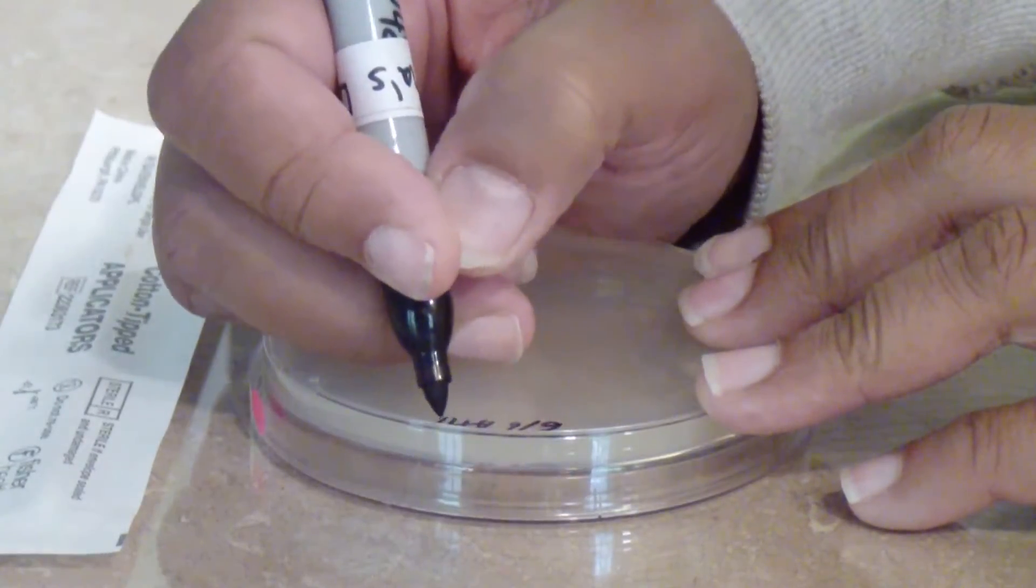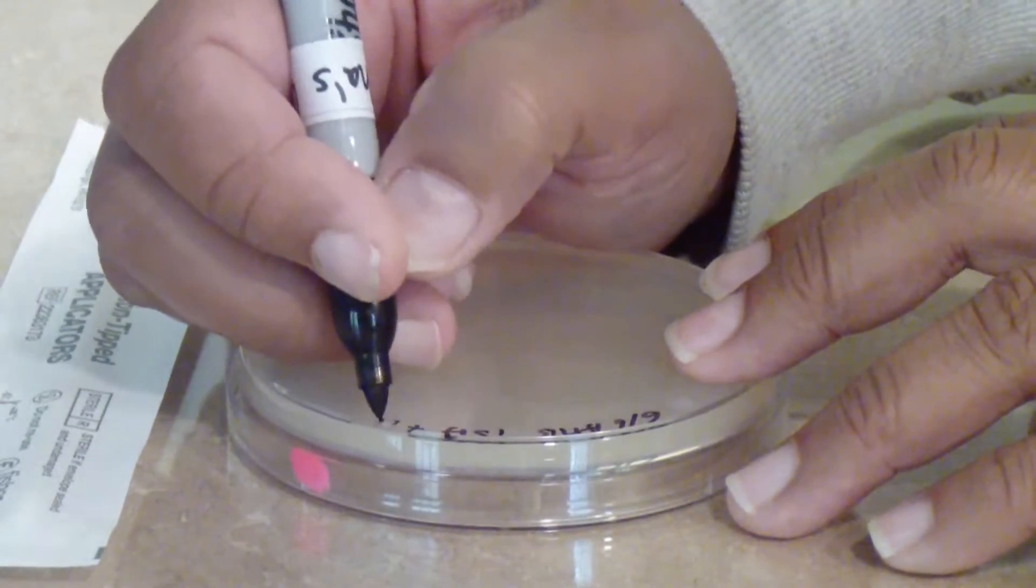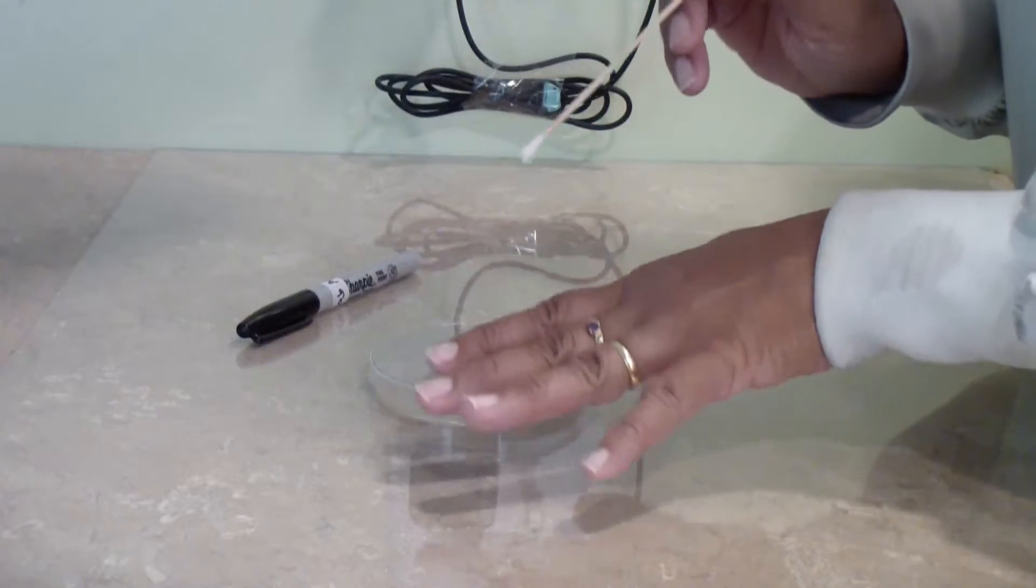You will need a cotton swab and a labeled TSA plate. Moisten the cotton swab with regular tap water. Then rub it over the surface you would like to sample.